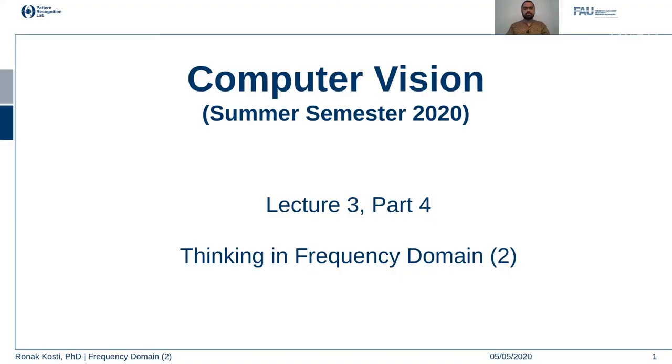Hello everyone and welcome back to the computer vision lecture series. This is lecture 3, part 4. We are going to continue talking about how we think in terms of the frequency domain. In the last part of this lecture we saw some examples of sampling and one of the problems of sampling called aliasing, and now we are going to continue talking more in terms of frequency domain.